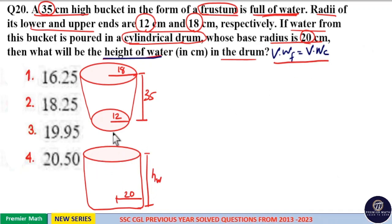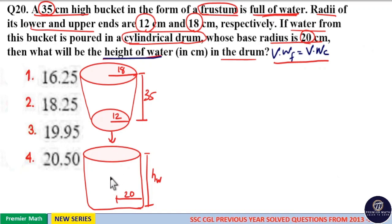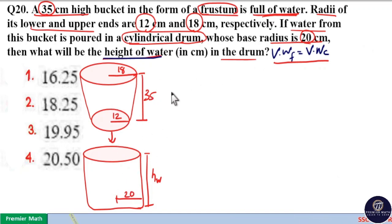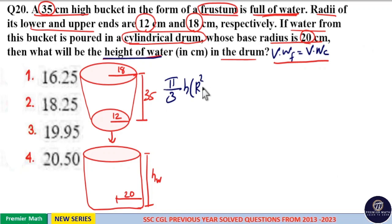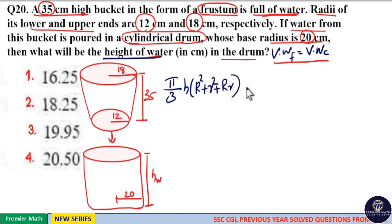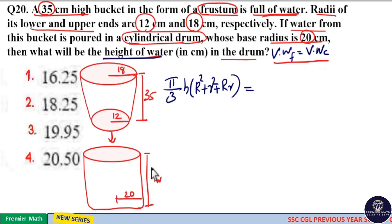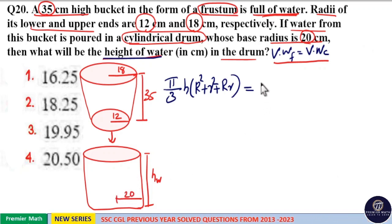When you pour this water from the frustum to the cylinder, the volume of water is equal. Volume of water in the frustum equals (π/3) × h × (R² + r² + R·r), and this equals the volume of water in the cylindrical drum. The volume of a cylinder is π r² h, where h is the height of water.